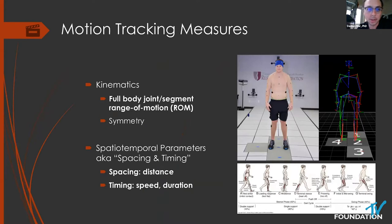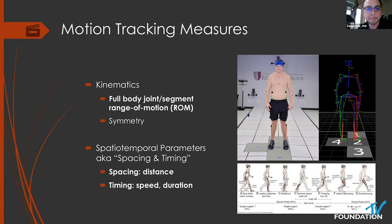When we apply this to spine patients, we can look at right and left symmetries, relevant for scoliosis patients or patients with unilateral pain. Spatiotemporal parameters is a fancy way of saying spacing and timing — measures related to the gait cycle, such as step length and walking speed. Key advantages are that it's the most comprehensive motion analysis tool, provides very good accuracy and precision, and is well-validated within spine by our institution and others. Disadvantages include the highest cost, highly complex setup, significant preparation time, and limited adaptability.